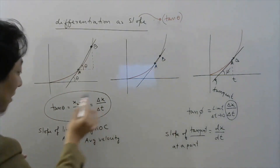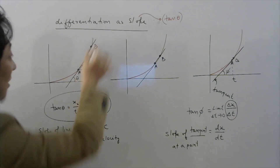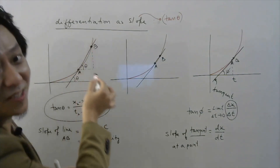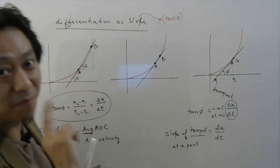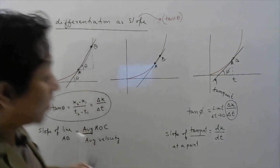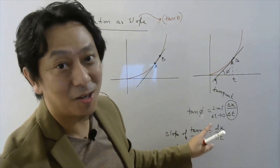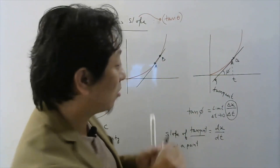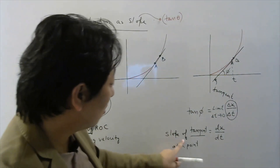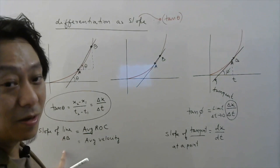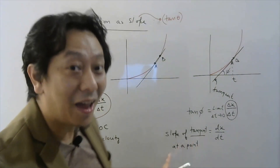So the average rate of change is nothing but tan theta — the slope of the line joining two points — because whenever you talk about average, there are two points, two instants. But when you talk about differentiation or instantaneous rate of change, you are talking about only one instant. So the slope of the line between two points becomes the slope of the tangent at a point.